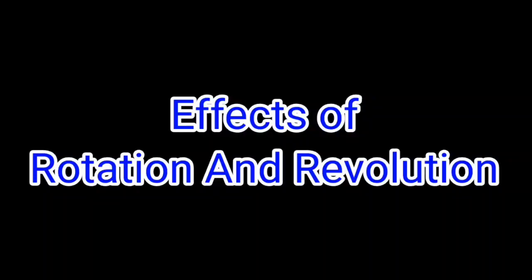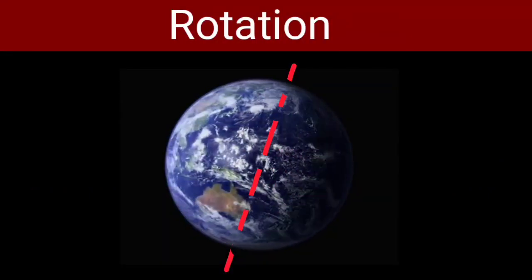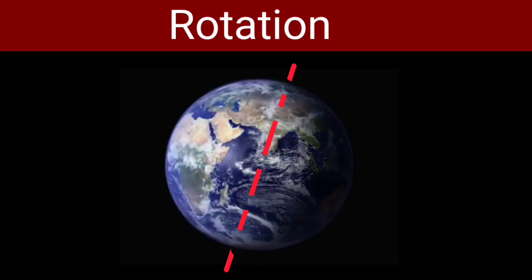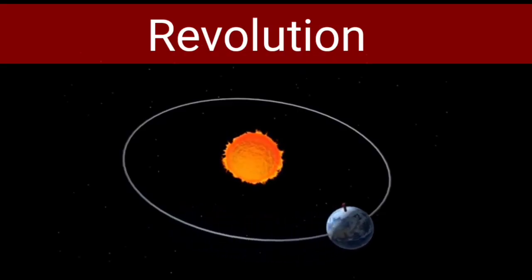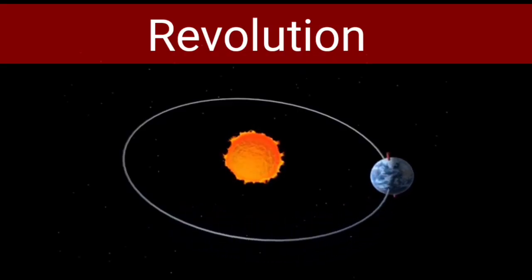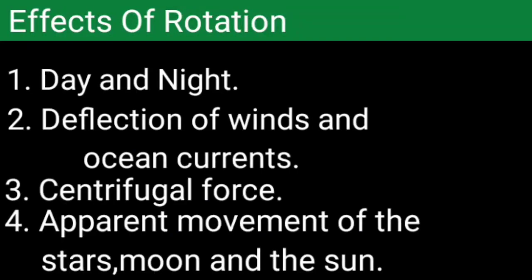Welcome to another segment of this video in which we are going to discuss the effects of rotation and revolution. Rotation means the spinning of the earth on its own axis. Revolution is the motion in which the earth goes around the Sun in a fixed elliptical path, which is termed as orbit.